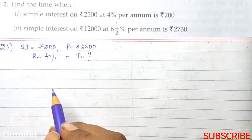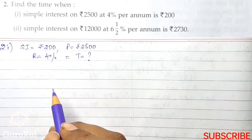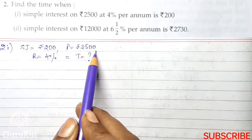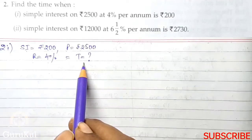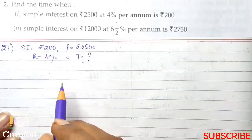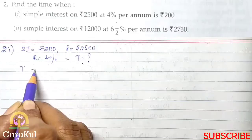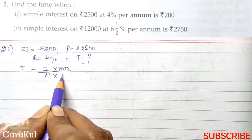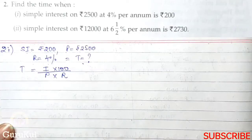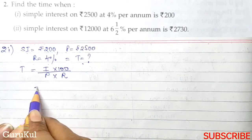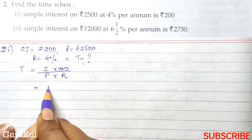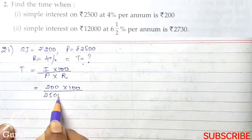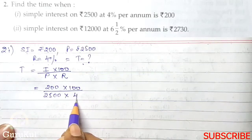So, to find out time, the formula is Interest into 100 by principle into rate. You need to keep all these formulas in mind. You need to learn them. So now we'll substitute respective values in their places.